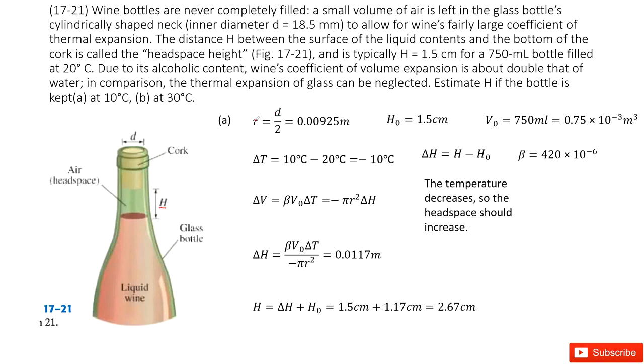So d is given. Very easily we can get the radius. So this is the first quantity. The second quantity gave us initially the temperature is 20 degrees and then the initial h is 1.5 centimeters. We write it there.